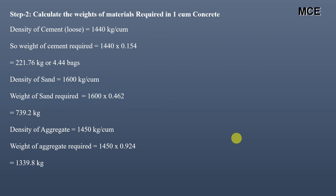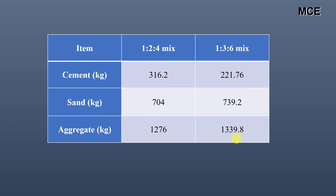Comparing the two results: for the 1:2:4 mix, cement required is 316.2 kg, whereas for 1:3:6 it is 221.76 kg. Sand for 1:2:4 is 704 kg, whereas for 1:3:6 it is 739.2 kg. Aggregate for 1:2:4 is 1276 kg, and for 1:3:6 it is 1339.8 kg, per cubic meter of wet concrete.